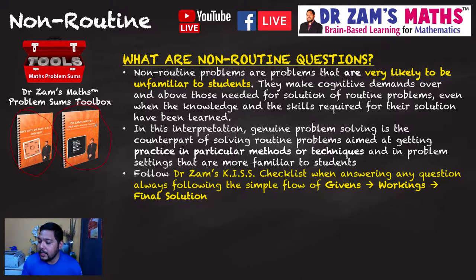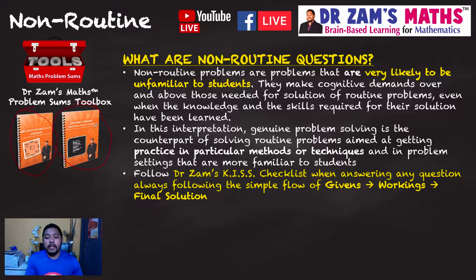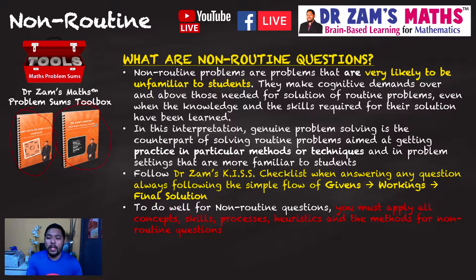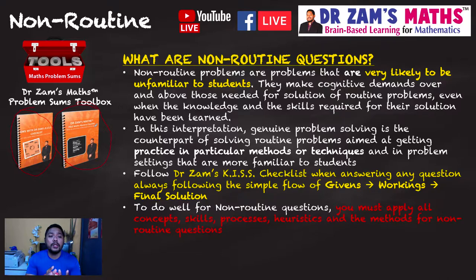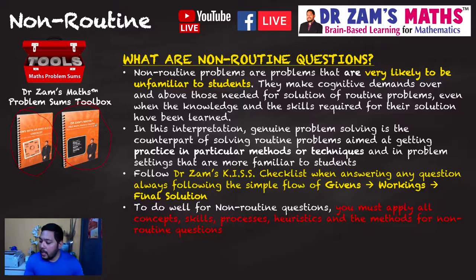Sign up for the newsletter to download the welcome gift — you'll get the KISS checklist and learn the GWS method. GWS: you start with Givens, find out what Solution is wanted, then produce the Workings. For non-routine questions, you must apply all concepts, skills, mathematical processes, thinking skills, heuristics, and methods. The more tools you know how to use, the more you'll definitely score a star.